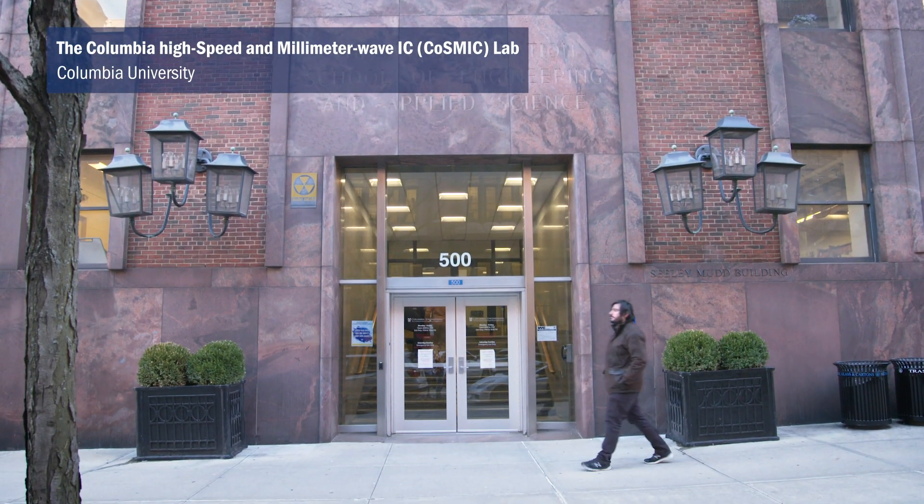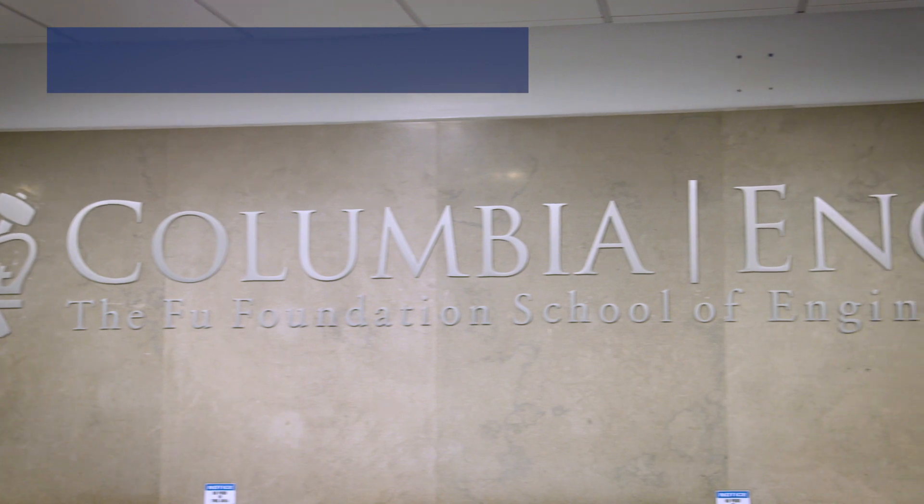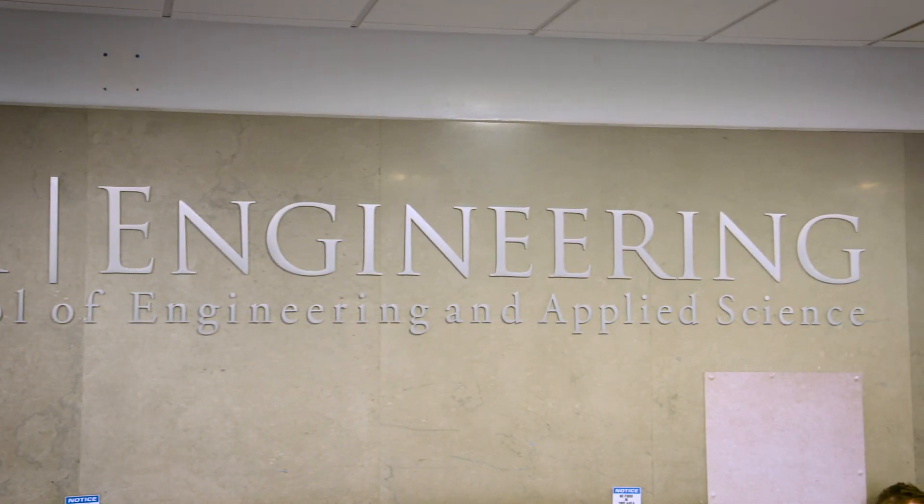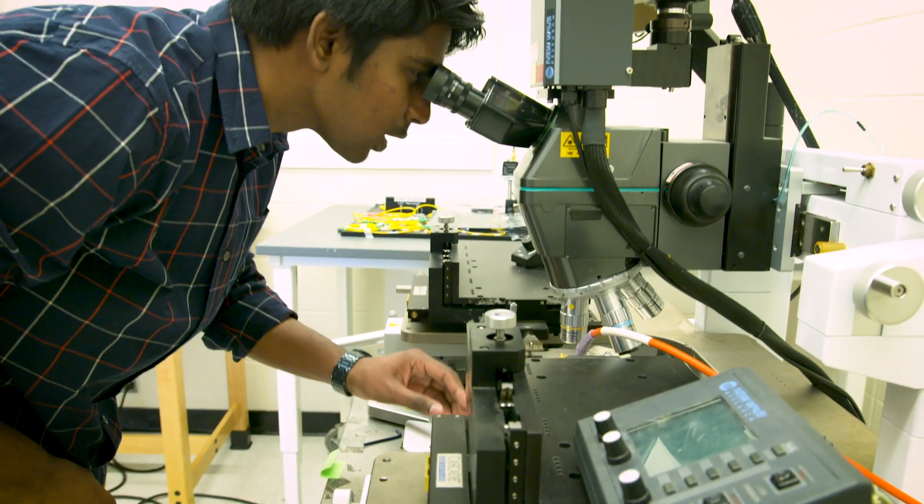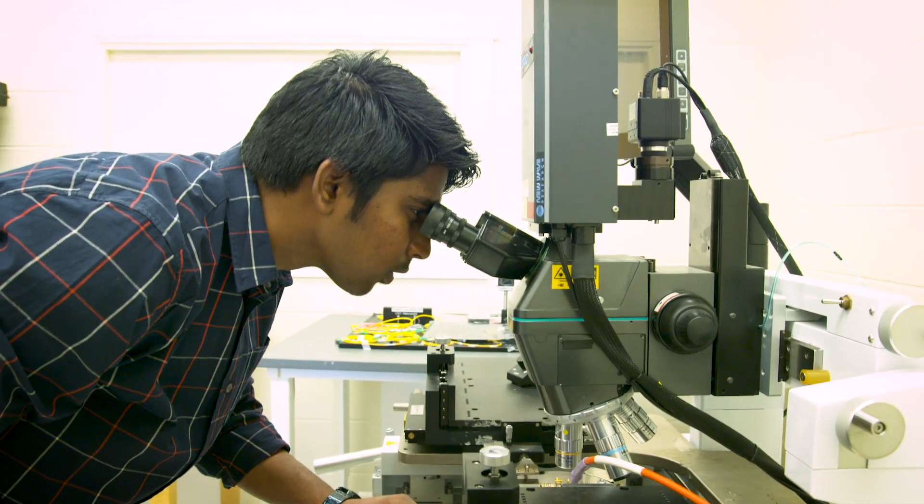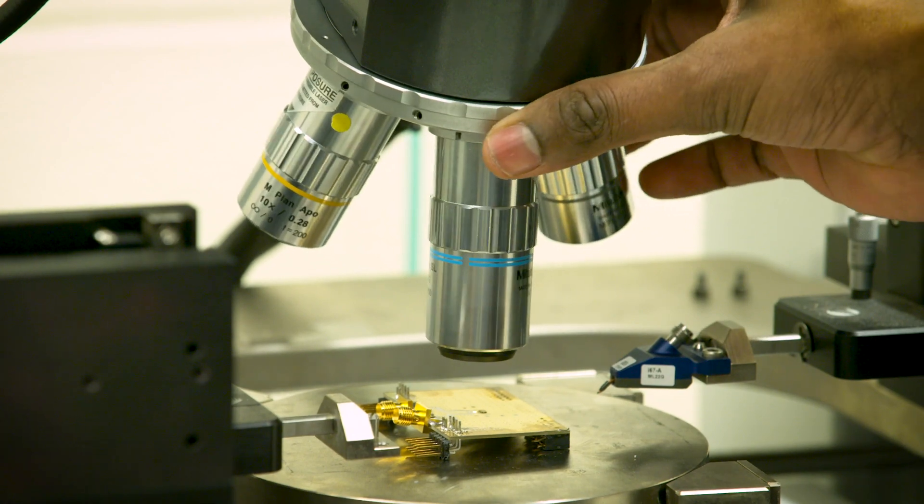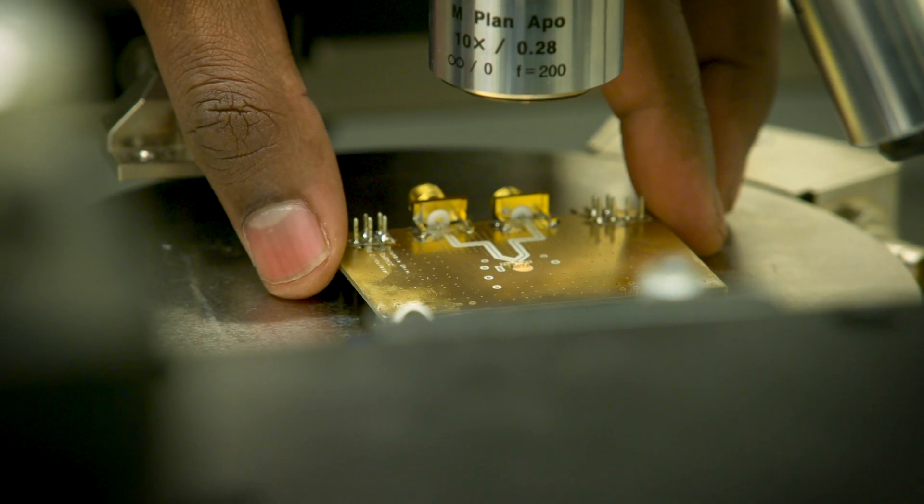The Columbia High Speed and Millimeter Wave IC Lab, also known as COSMIC Lab, works at the intersection between applied physics and engineering. We look to make advances in applied physics, specifically applied electromagnetics, but at the same time translate those advances to practical engineering applications.